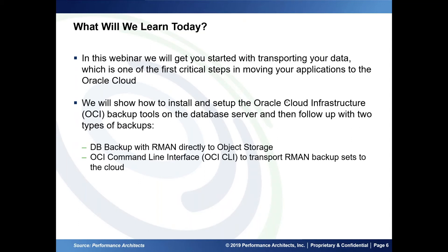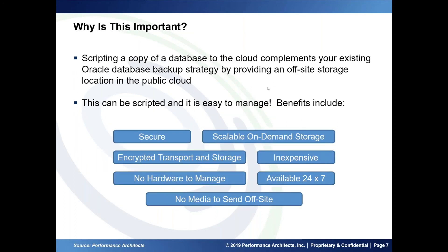I'll be showing two types of backups: how to launch a database backup directly to the cloud using RMAN to the OCI object storage, and then using the command line interface to transport RMAN backup sets to the cloud. The second approach would be useful if you already have an RMAN on-site backup strategy and want to keep those backups local, while ensuring a secondary copy for database recoverability.